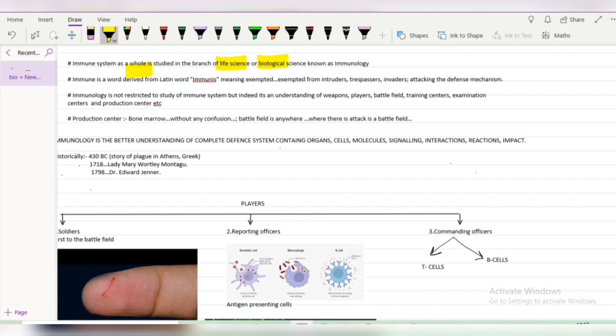Whole means it's a branch of life science or biological science where we study the weapons, players, battlefield, training centers, examination centers, as well as the production center of the immune system as a whole. This immune system or immunology has been derived from a Latin word, immunis. Immunis means exempted. Exempted from intruders, trespassers, invaders or anything which is attacking our defense weapons.